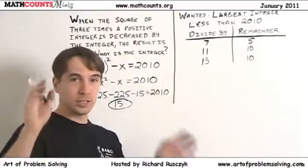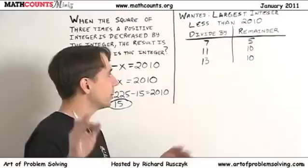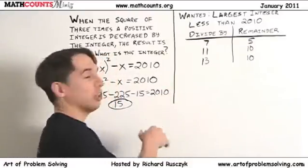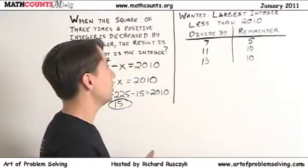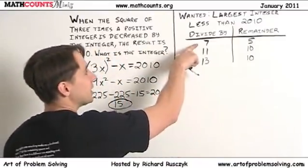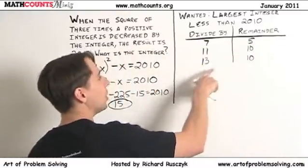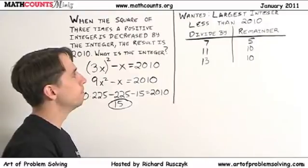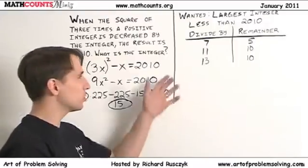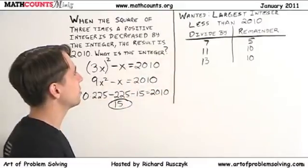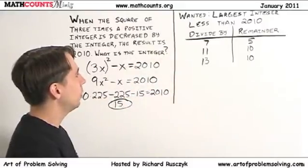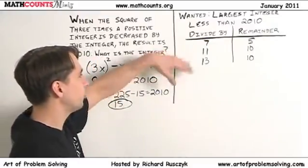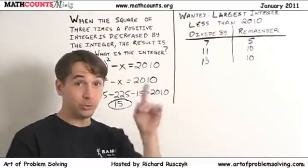Now while you're sitting there with your quadratic formula and still multiplying all those numbers together and figuring out square roots, I'm going to move over here. I wanted the largest integer less than 2010, so it can't be that large. If I divide by 7, I get a remainder of 5. Divide by 11 or by 13, I get a remainder of 10. Now I could try to set up equations with all these words and such, but oh boy, maybe that'll work. I don't see how, and I don't see some simple stupid way to satisfy all three of these.